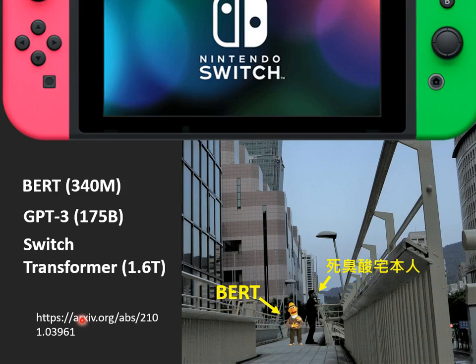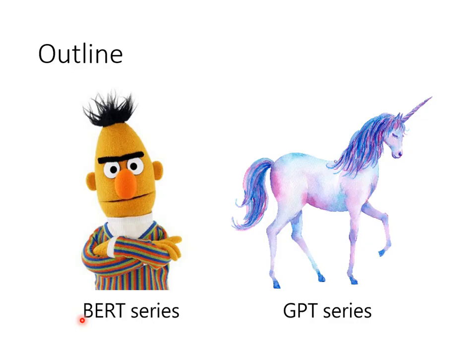I heard that the human brain has 100 billion neurons. If we map neurons to parameters, the amount of parameters in the Switch Transformer turns out to be more than the number of neurons in the human brain. These huge models — what are they doing? In the following lectures, we will talk about BERT and GPT and introduce these two models to you, so you know what these self-supervised learning models do. Let's take a break and we will be back in 10 minutes.